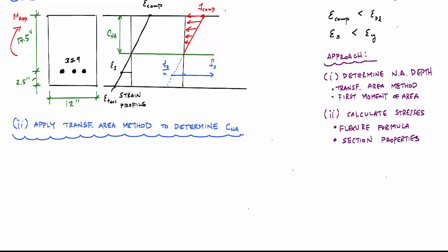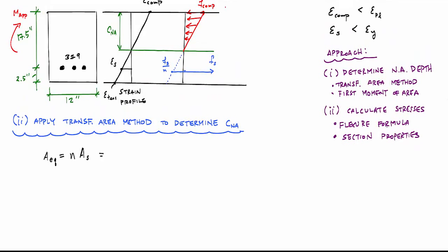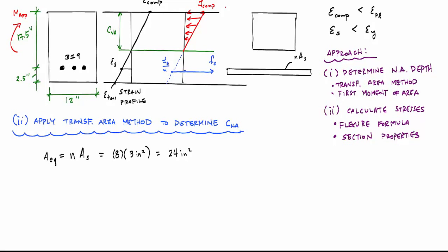Because we have a composite section, we transform the steel into an equivalent area of concrete by multiplying by the modular ratio n. Our steel area is three inches squared, so the equivalent concrete area is 8 × 3 = 24 inches squared. The transformed cross-section looks like a rectangular concrete area above the neutral axis, with a large equivalent steel area below, and the width b remains 12 inches. We're essentially finding the centroid of this combined section.